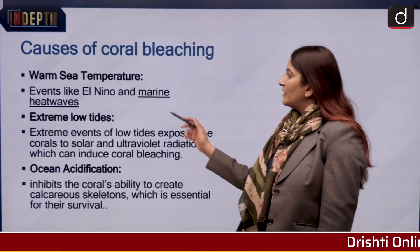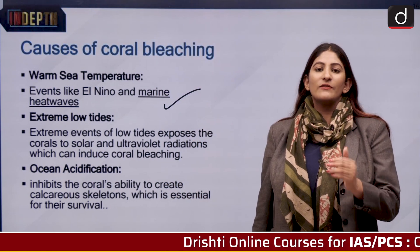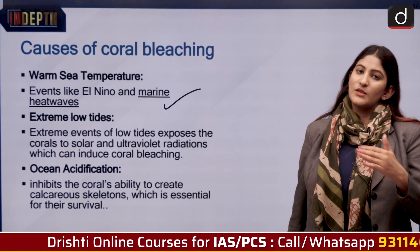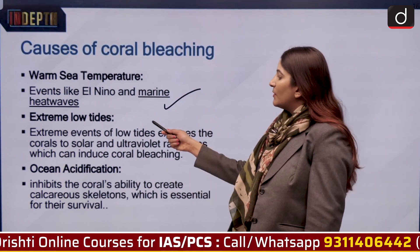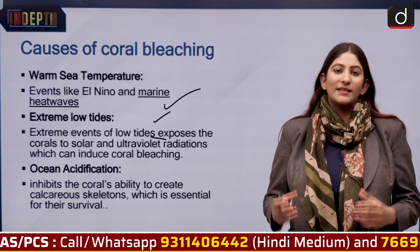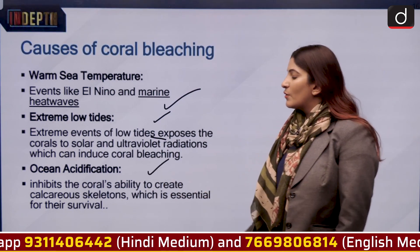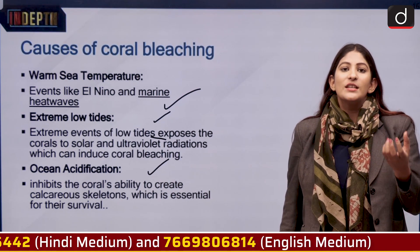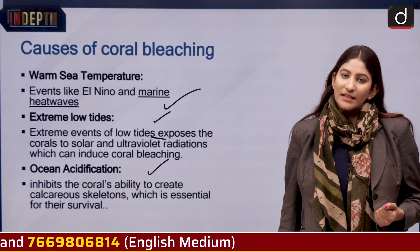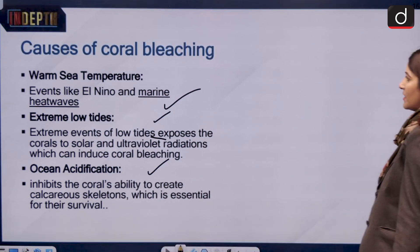The causes of coral bleaching include: events such as El Niño and marine heat waves, which change the specific temperature in which corals thrive, causing stress and prompting zooxanthellae to leave. Extreme low tides expose corals to too much sunlight and pollution. Ocean acidification — as oceans sequester carbon dioxide, the water's acidity increases — also causes zooxanthellae to leave the corals.